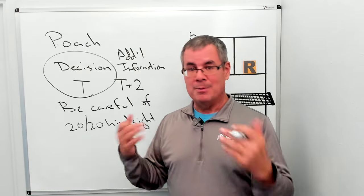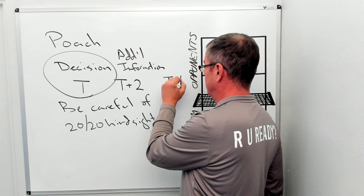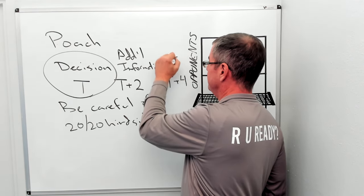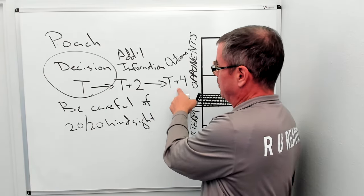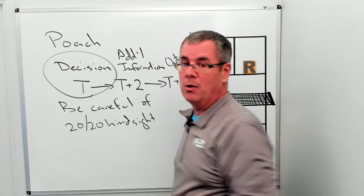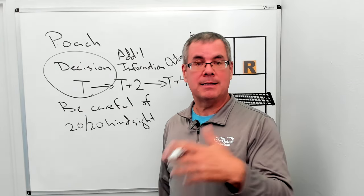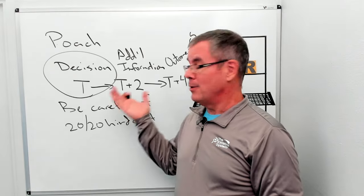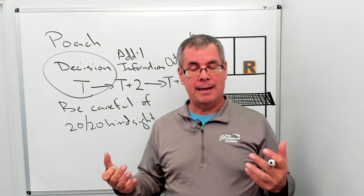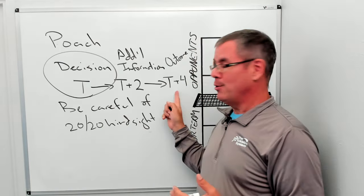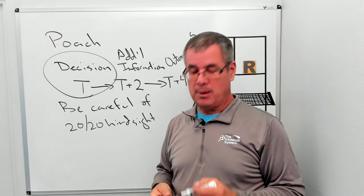We second-guess the decision because of 20/20 hindsight — seeing what happened later. That's just how life works; we don't have a time machine. We make our decision at T, at T plus two we have additional information, and at T plus four we have the outcome. The problem is we see the outcome and look back at T and say 'oh I made a mistake' — but did you really? As long as the decision was sound at the time, based on the information you had, it's perfectly fine. You can apply this same analysis to outballs — sometimes you let a ball go thinking it's out and it lands in. If you apply 20/20 hindsight, you have to let go at T, not T plus four.